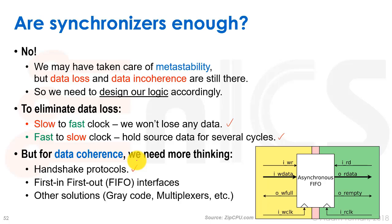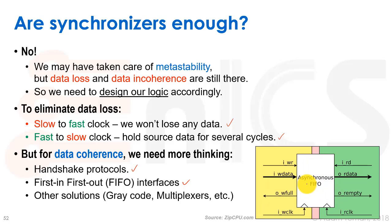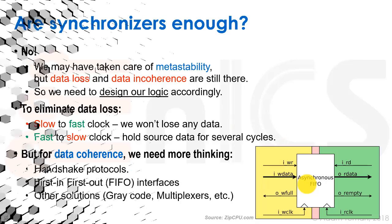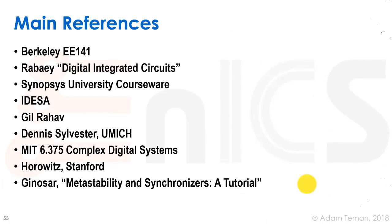A very common approach is an asynchronous FIFO interface, where one clock writes into the FIFO and another clock reads from it, eliminating direct clock domain crossings — all data passes through this buffer. Other solutions include gray code and multiplexers. It's a broad subject, and I won't go further into it in this course. That concludes our discussion of clock tree synthesis and clocking in general.